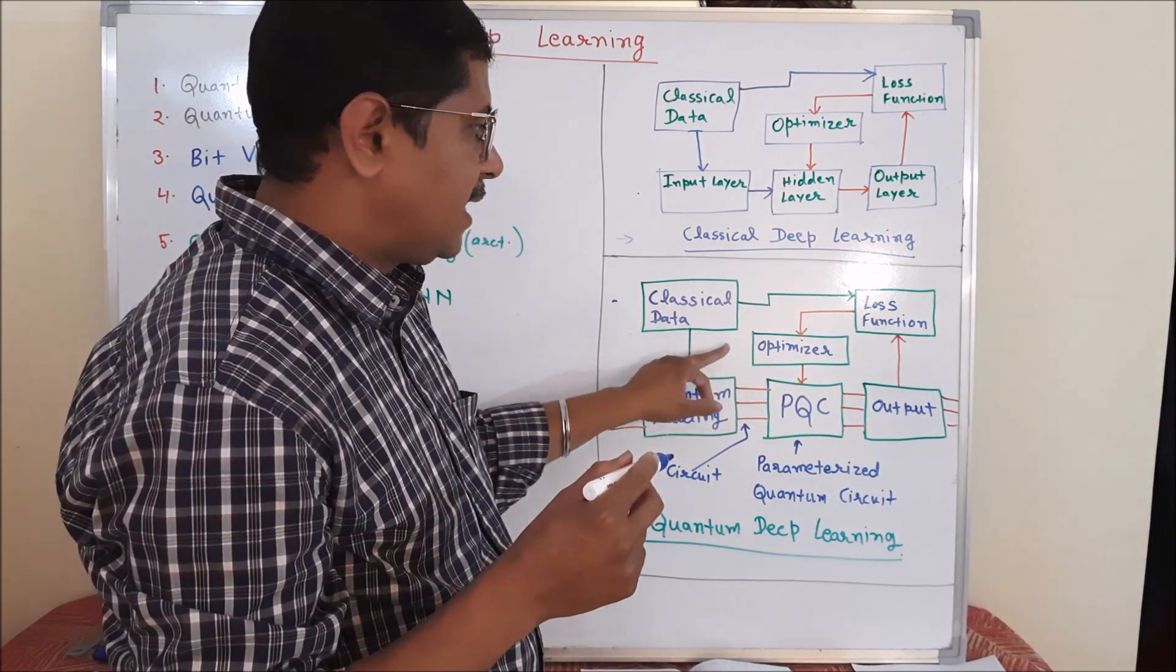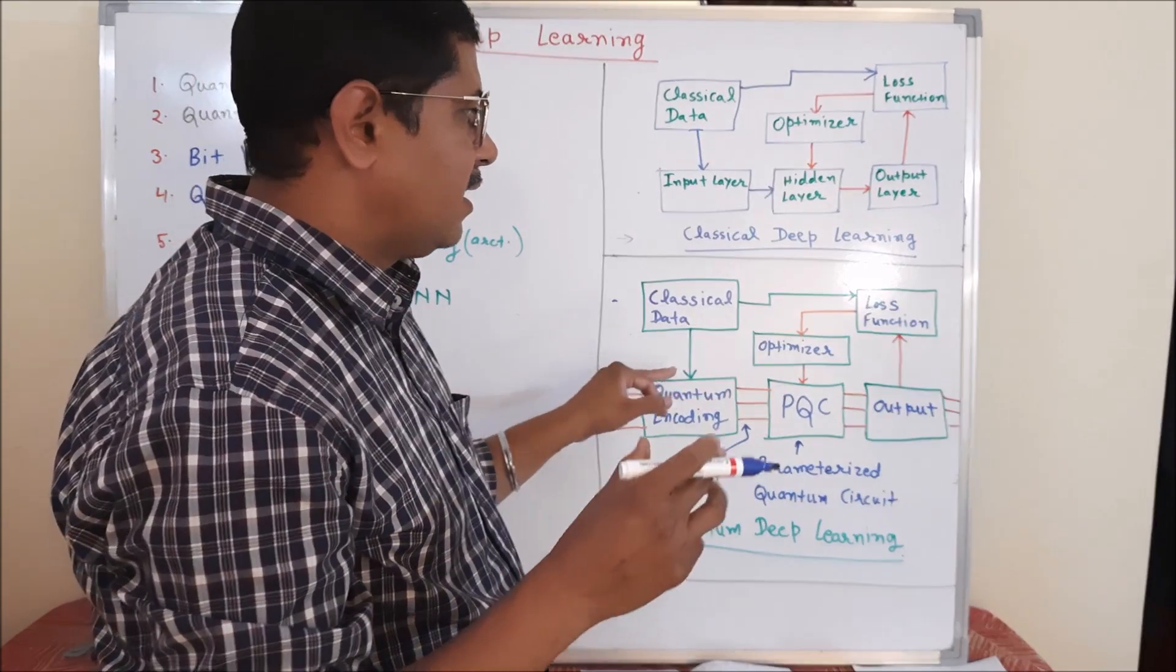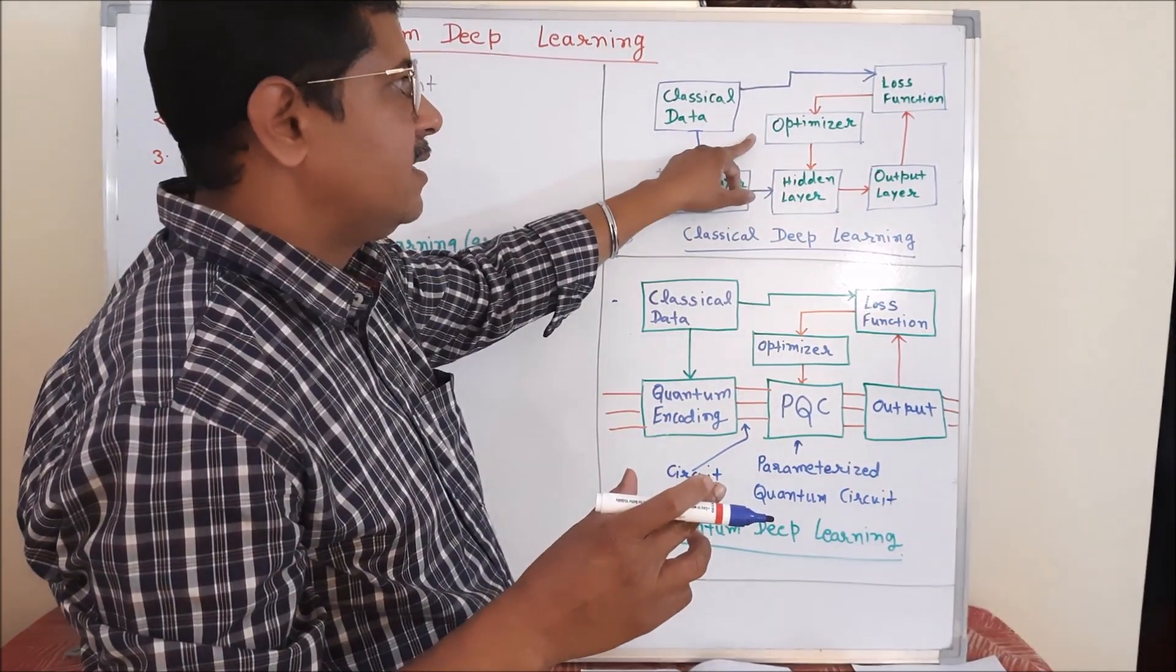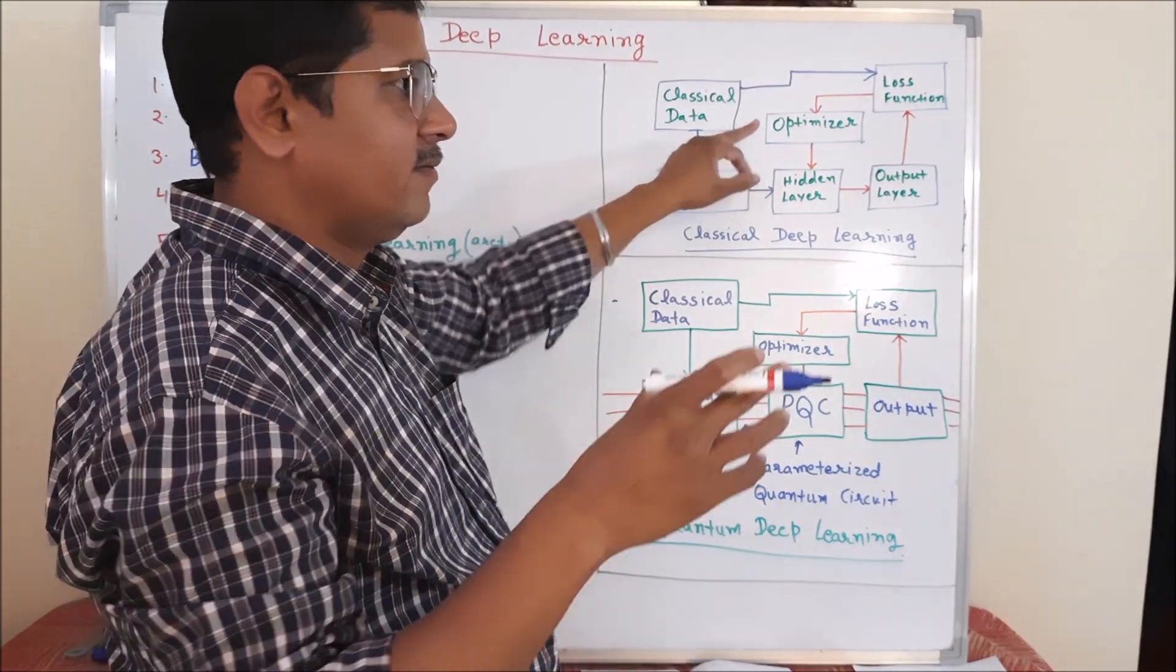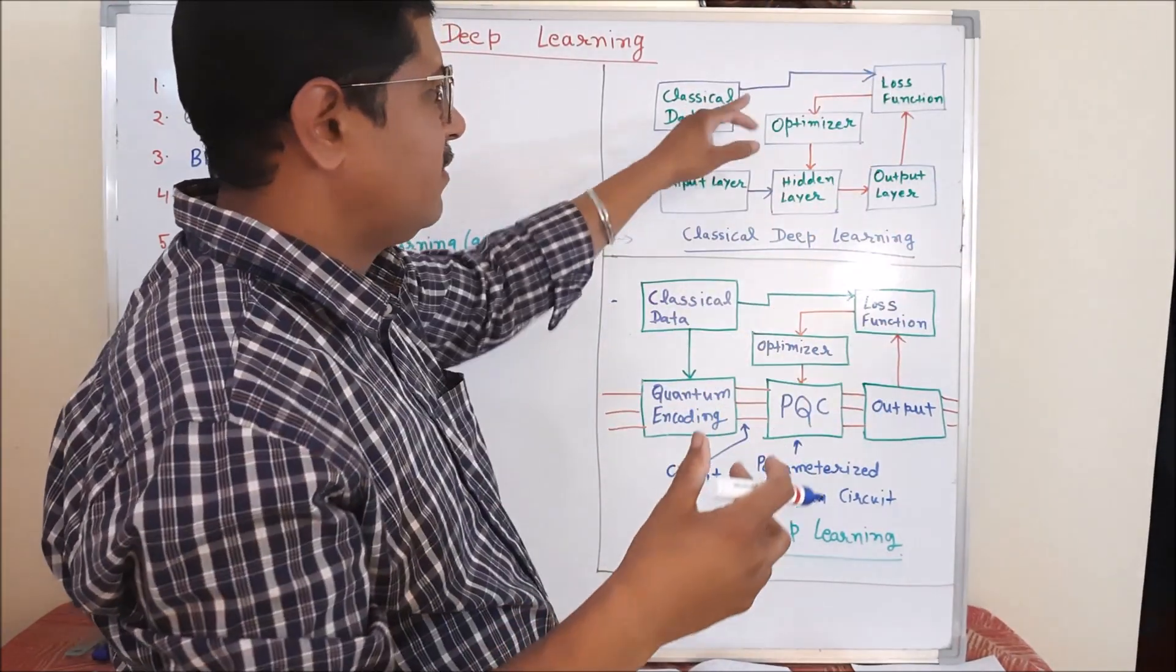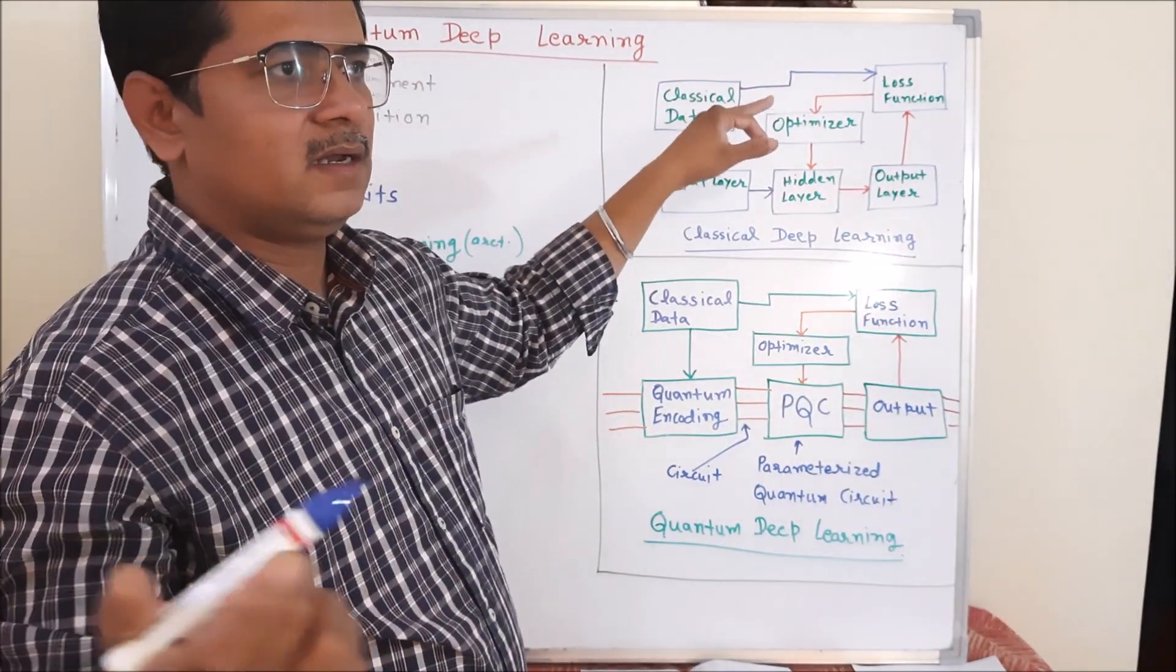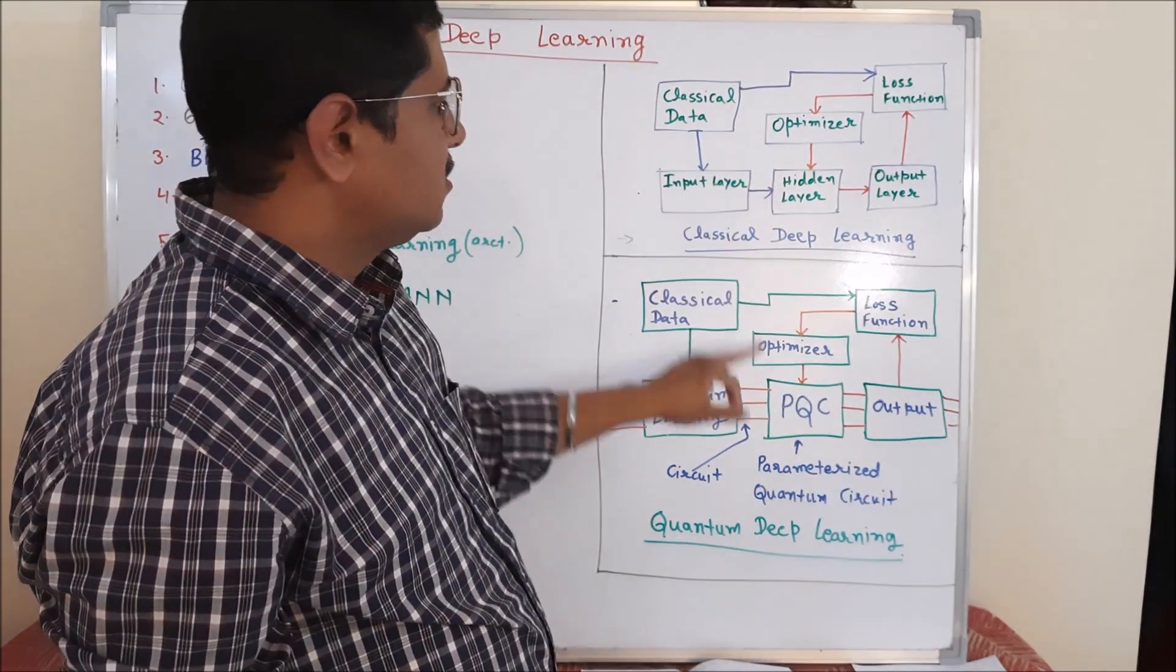And then we apply the optimizers like gradient descent. We apply the optimizers like gradient descent with gradient descent, like Adam and other optimizers that you can watch in my other classical deep learning tutorials.